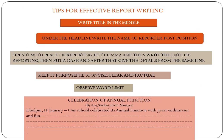Effective report writing के क्या tips हैं, वो हम जान लें। सबसे पहले write title in the middle — report writing के मध्य में आप title लिखें, और उस headline के नीचे reporter का नाम, उसकी पद और उसकी जो भी स्थिति है उसका वर्णन करें। इसके बाद जब report writing शुरू करें तो place of reporting लिखनी पड़ेगी। Open it with place of reporting, put comma and then write the date of reporting।